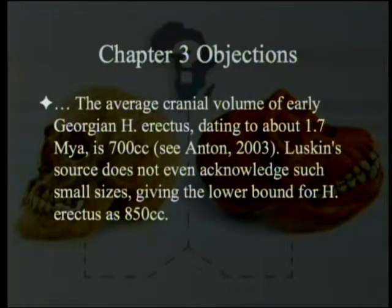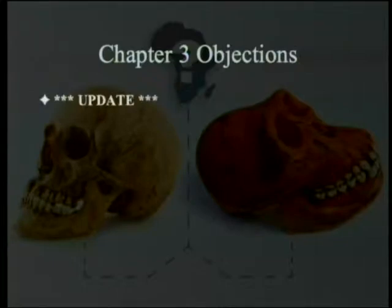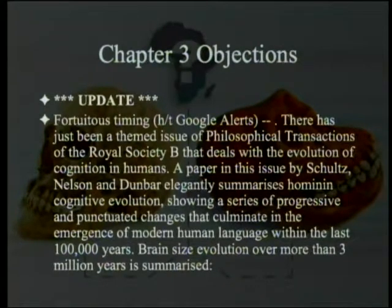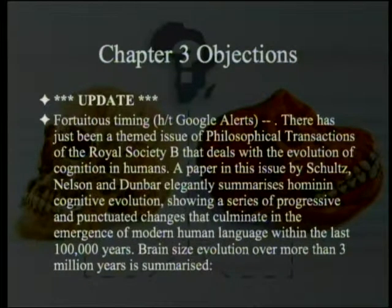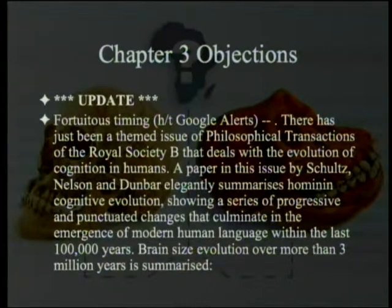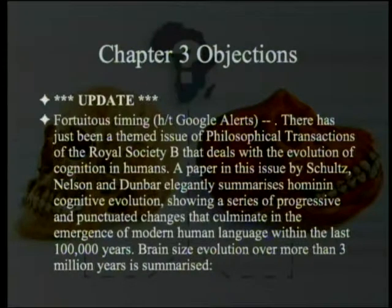The average cranial volume of early Georgian Homo erectus, dating to about 1.7 million years ago, is 700 cc. Luskin's source does not even acknowledge such small sizes, given the lower bounds for Homo erectus at 850 cc. McBride then has an update, noting fortuitous timing: there's just been a themed issue of Philosophical Transactions of the Royal Society B dealing with the evolution of cognition in humans. A paper by Schultz, Nelson, and Dunbar elegantly summarizes Homo and cognitive evolution, showing a series of progressive and punctuated changes that culminate in the emergence of modern human language within the last 100,000 years. Brain-size evolution over more than three million years is summarized.